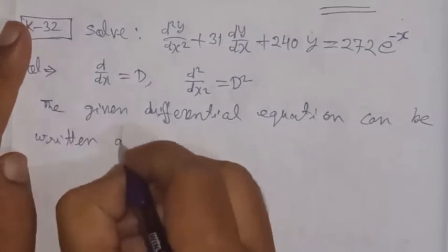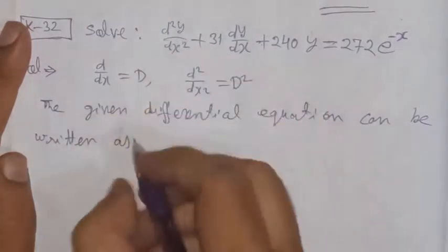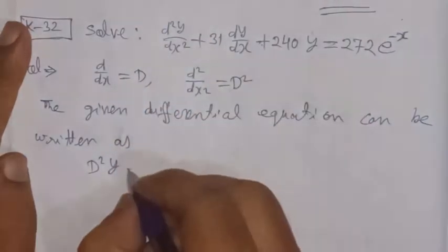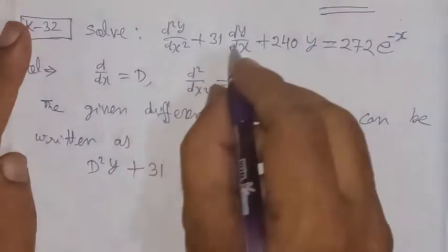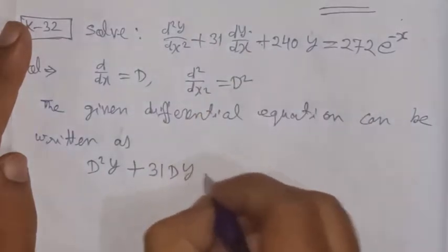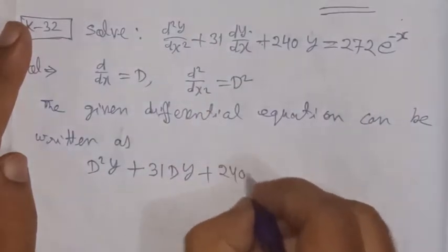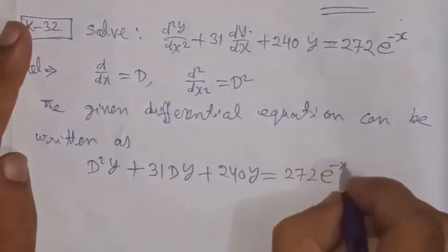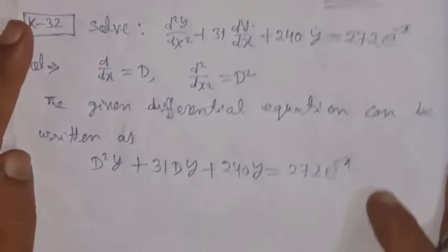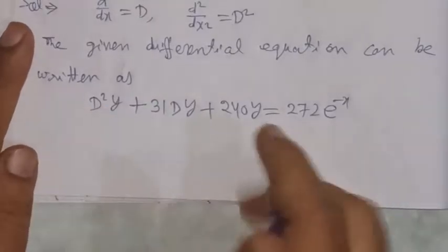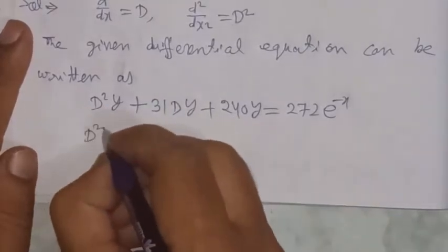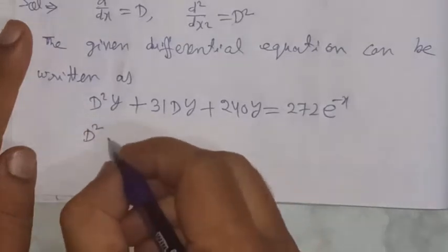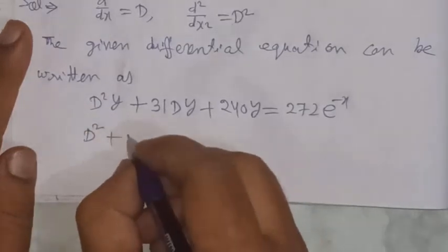The given differential equation can be written as: D²y + 31·Dy + 240y = 272·e^(−x). The second derivative term is written as D²y, and the first derivative as 31Dy, so the equation becomes (D² + 31D + 240)y = 272·e^(−x).